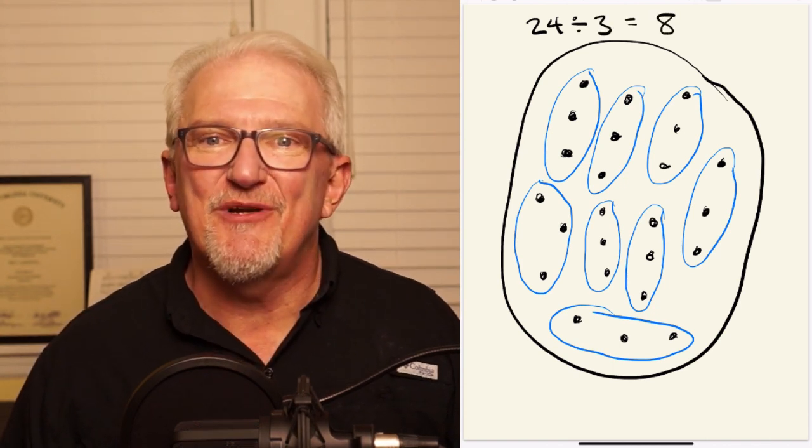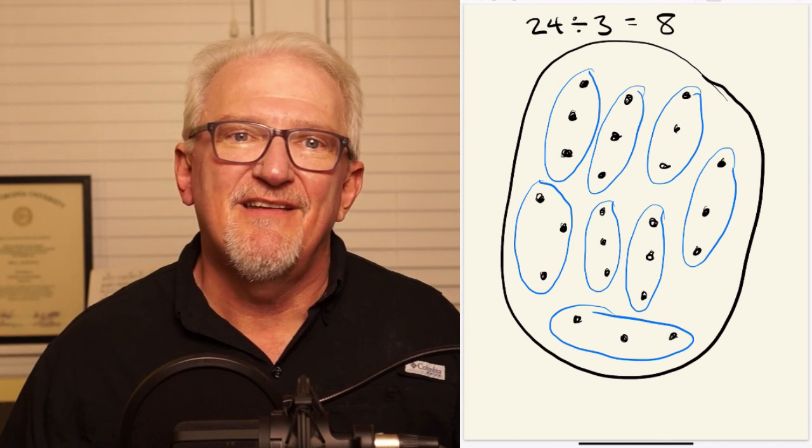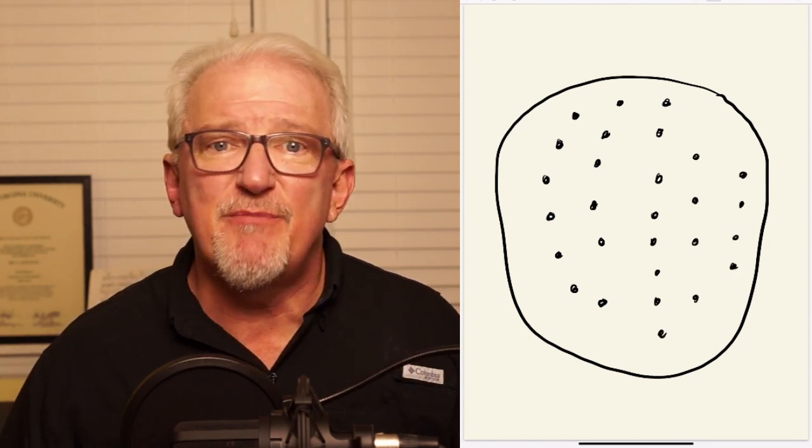In other words, 24 divided by 3 is equal to 8. Let's look at another example. Consider the problem of dividing 12 into 28. Proceeding as before, we begin with a set of 28 dots and ask how many groups of size 12 can be formed.